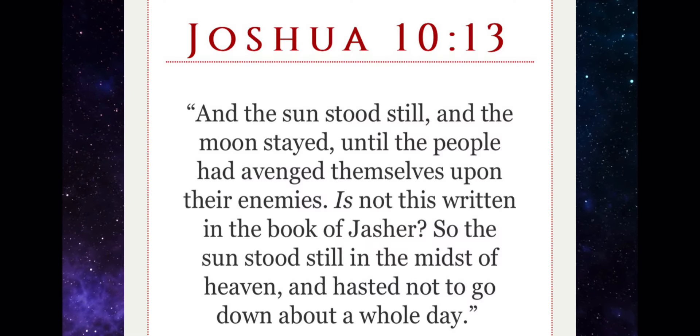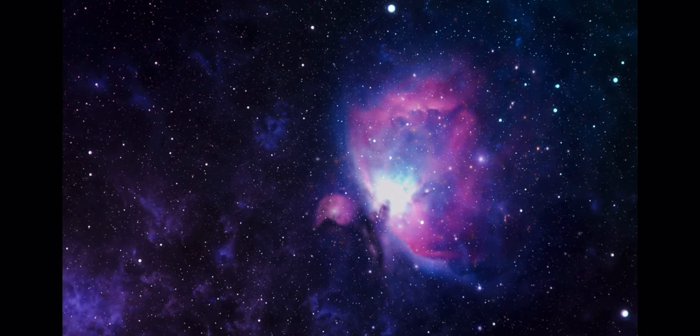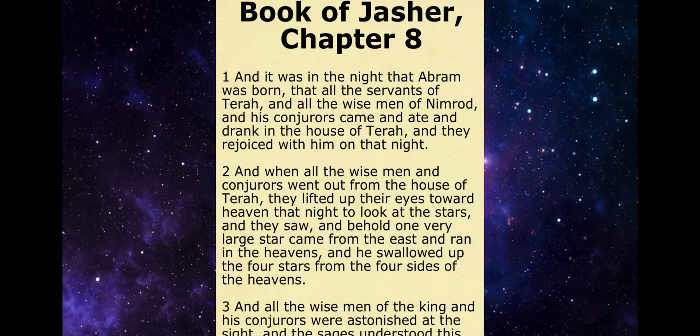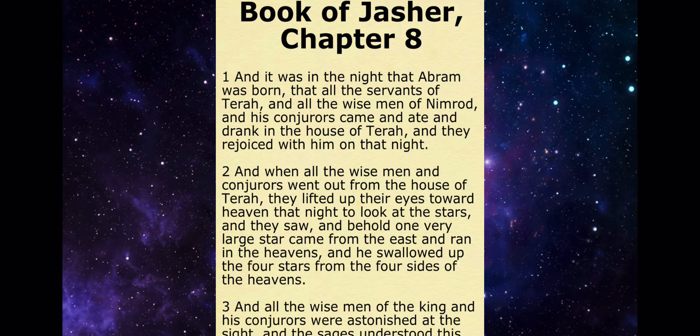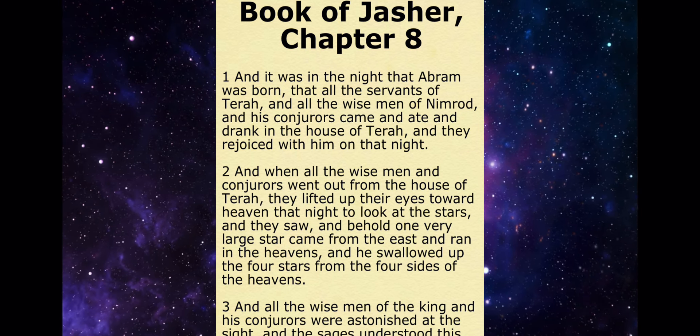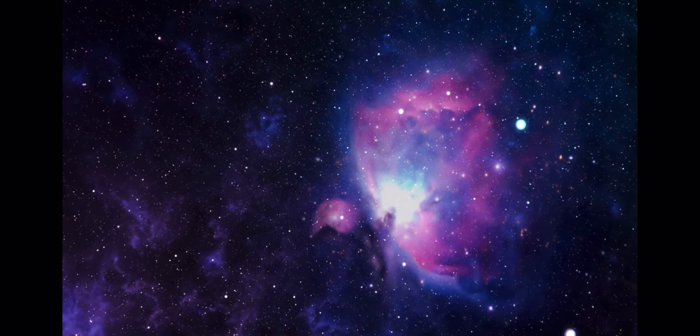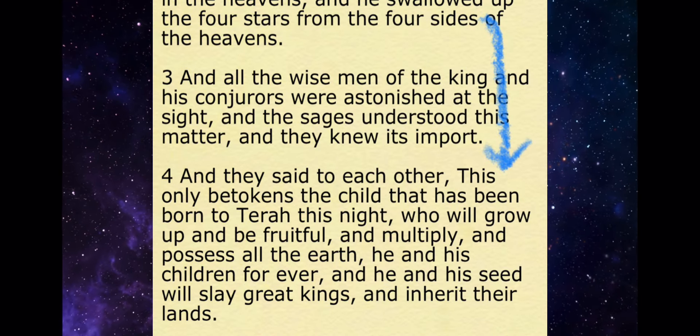You see this in Joshua 10:13, and there's other scriptures that mention the book of Jasher. So this book is legit. With that being said, in the book of Jasher, the wise men in these times decoded Abraham's star that rose up in the east and saw how Abraham and his descendants would inherit the land and multiply.